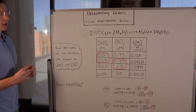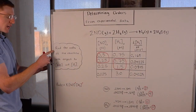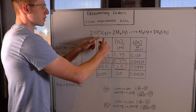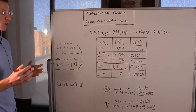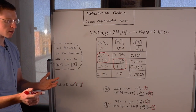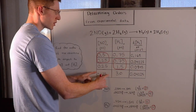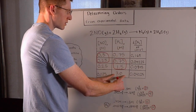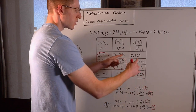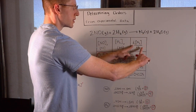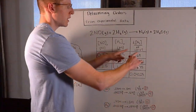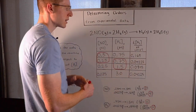Now let's use what we just learned to solve a problem. I've got a reaction written up here and I want you to find the order with respect to NO and H2, which are the two reactants. I've got a table of data: the first column has initial concentrations of NO, the second has initial concentrations of H2, and the third has the overall rate of the reaction — the change in concentration of N2 per change in time — in units of molarity per second. Each row corresponds to a different trial.